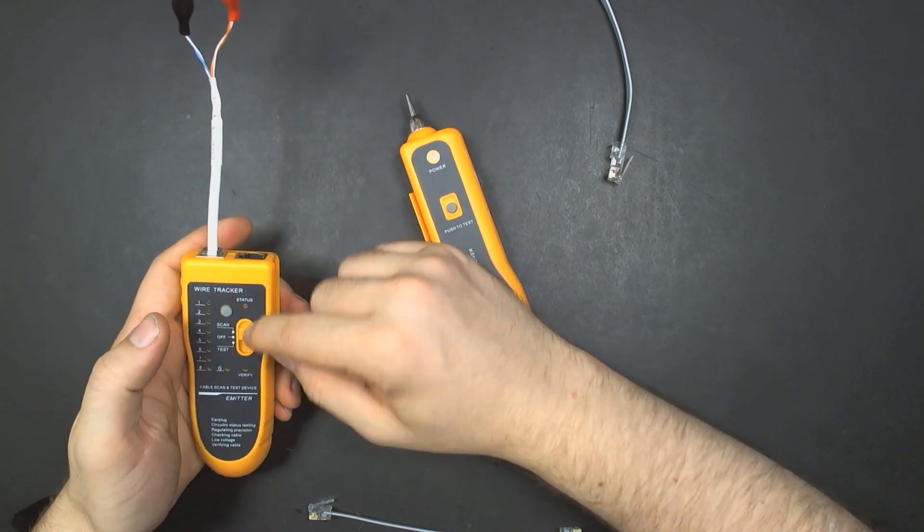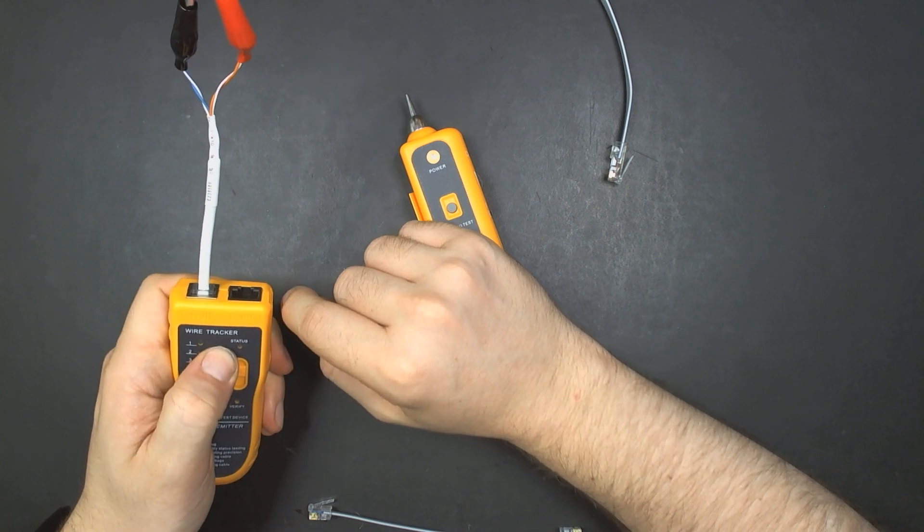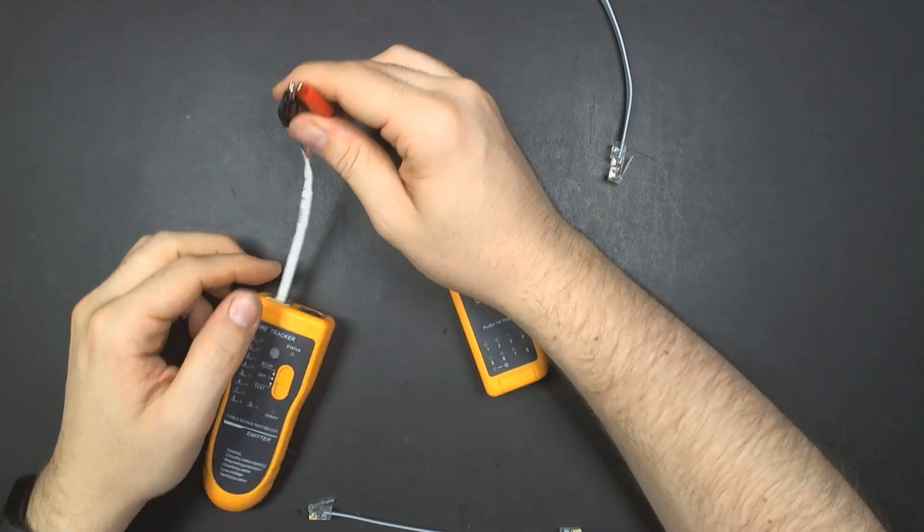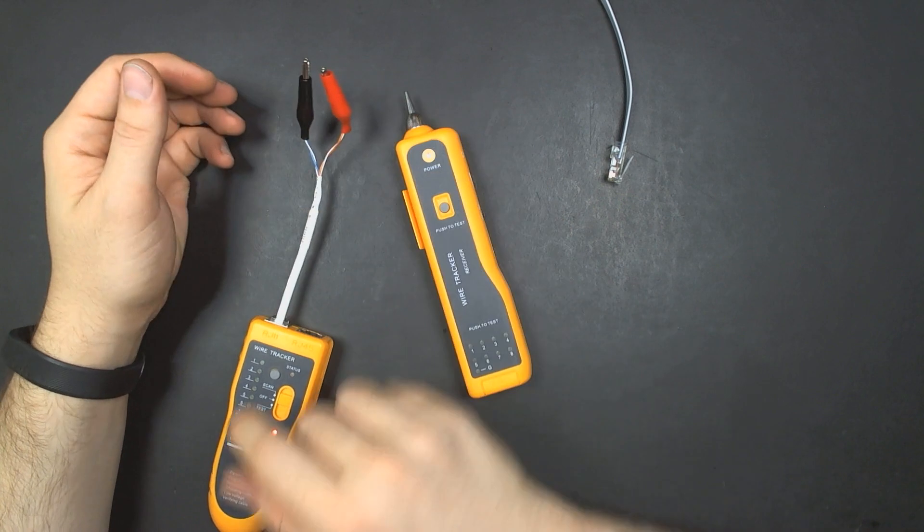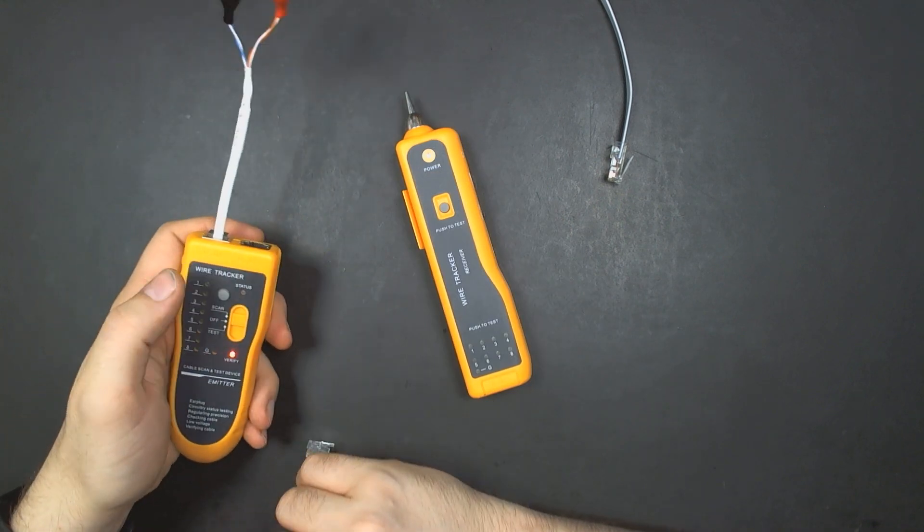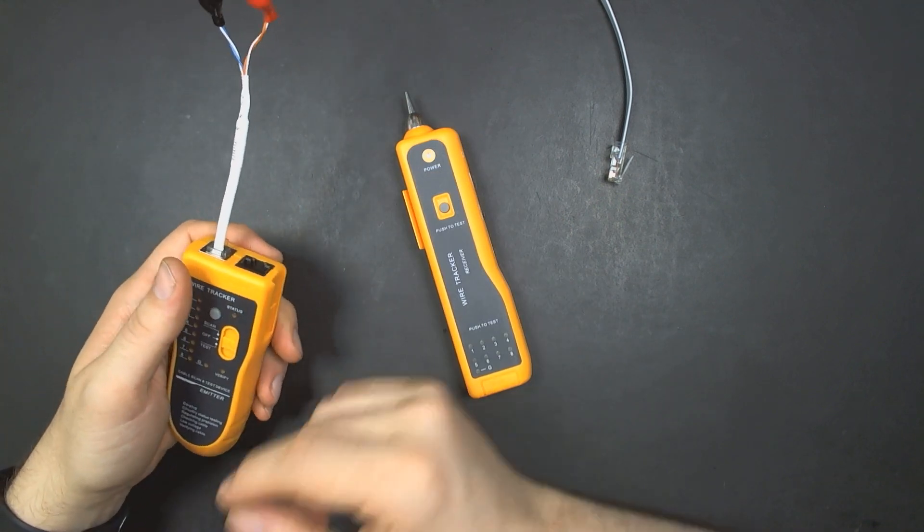There's another one where if you put it on scan and hold the button, you can also do a very basic DC voltage check. That's not a feature I would ever use. I would use my meter for that, but it's there.